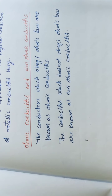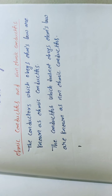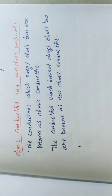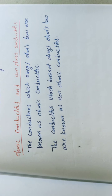Conductors that obey Ohm's law are called ohmic conductors, while conductors that do not obey Ohm's law are called non-ohmic conductors. In the next class we will discuss applications, resistance, and conductance concepts. Thank you.